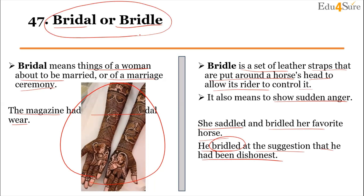To remember the difference, use this sentence: 'Brides in their bridal gowns wait for grooms to arrive on their bridle horse.' Here, bridal (A) comes first with the bride, and bridle (E) comes with the horse.